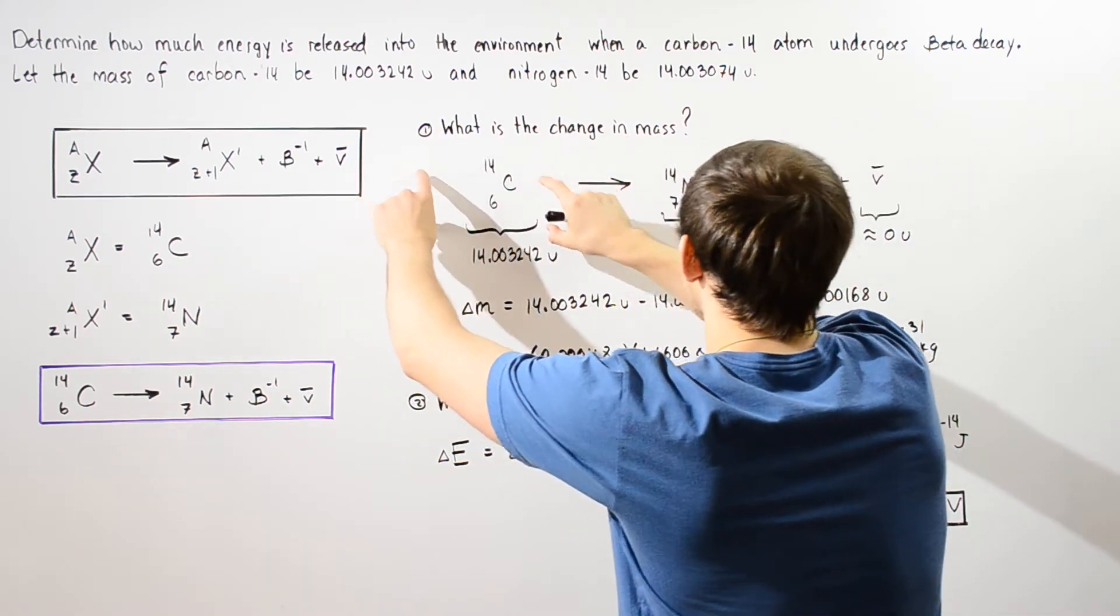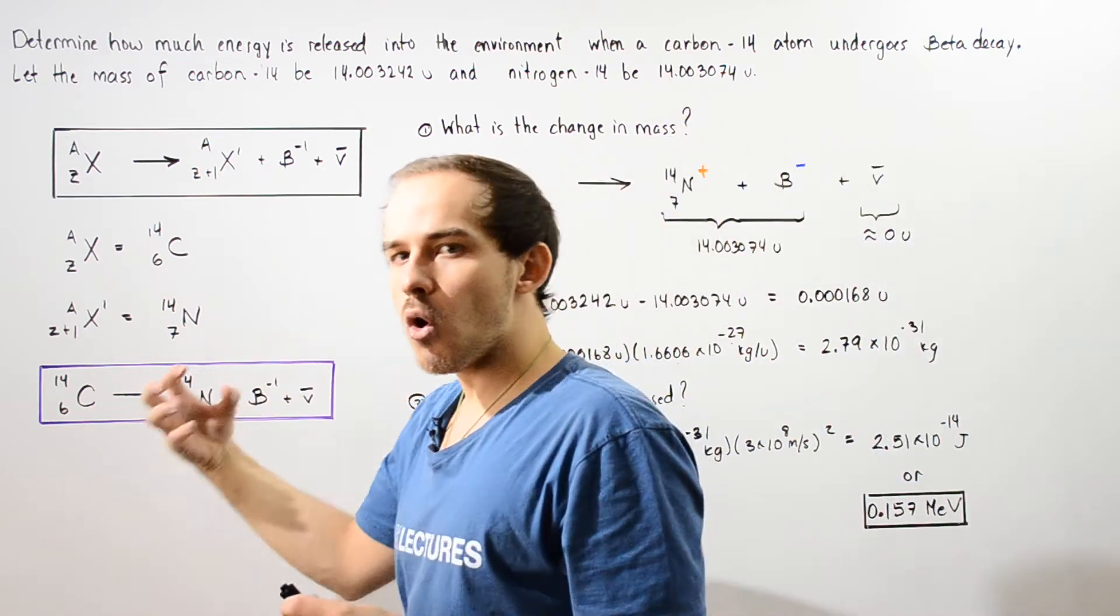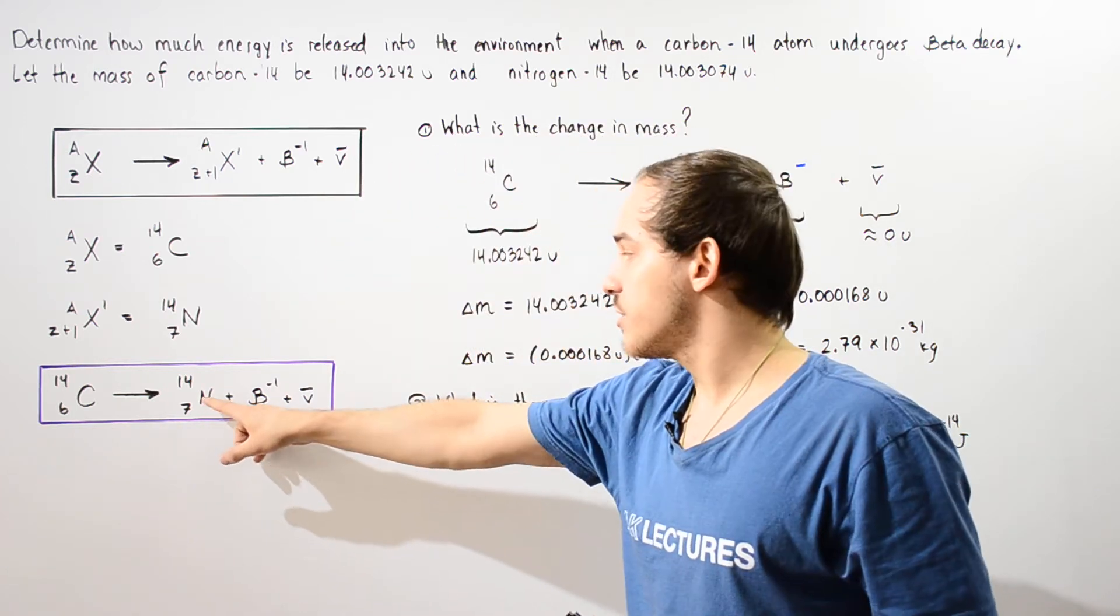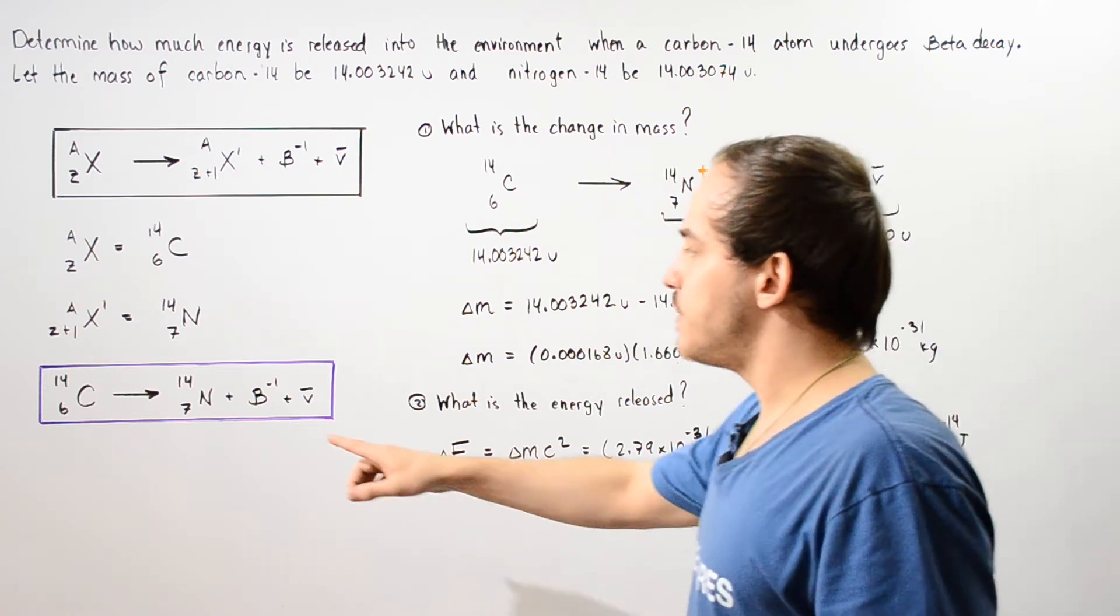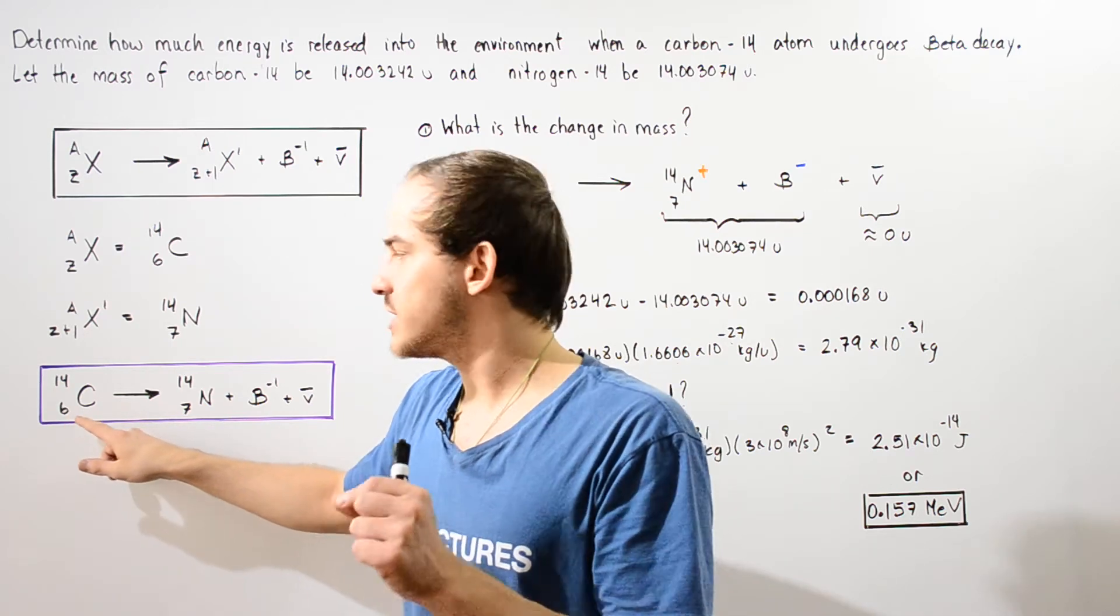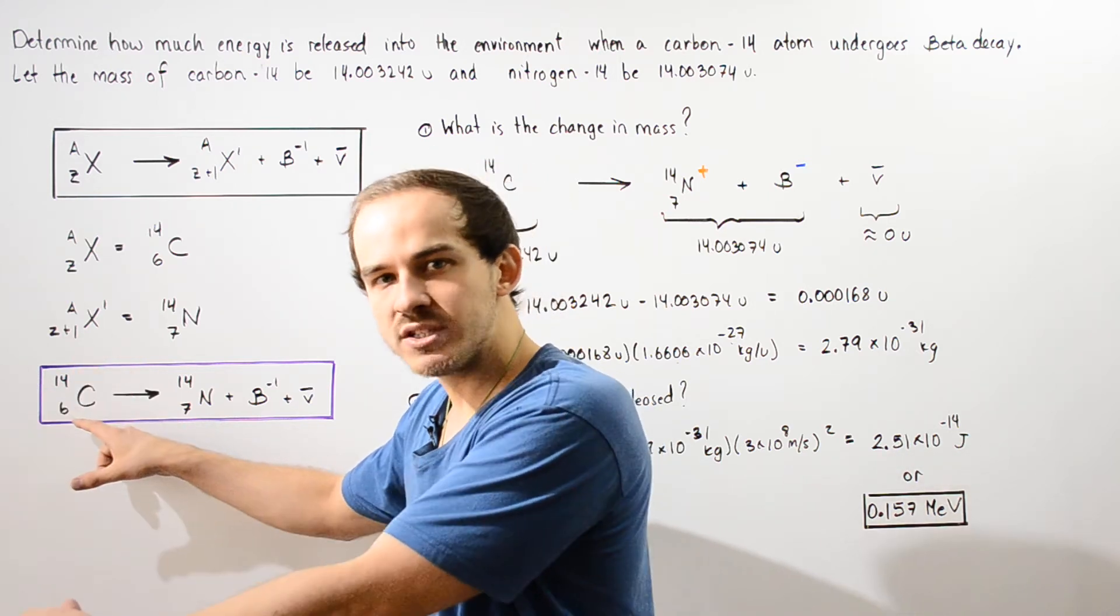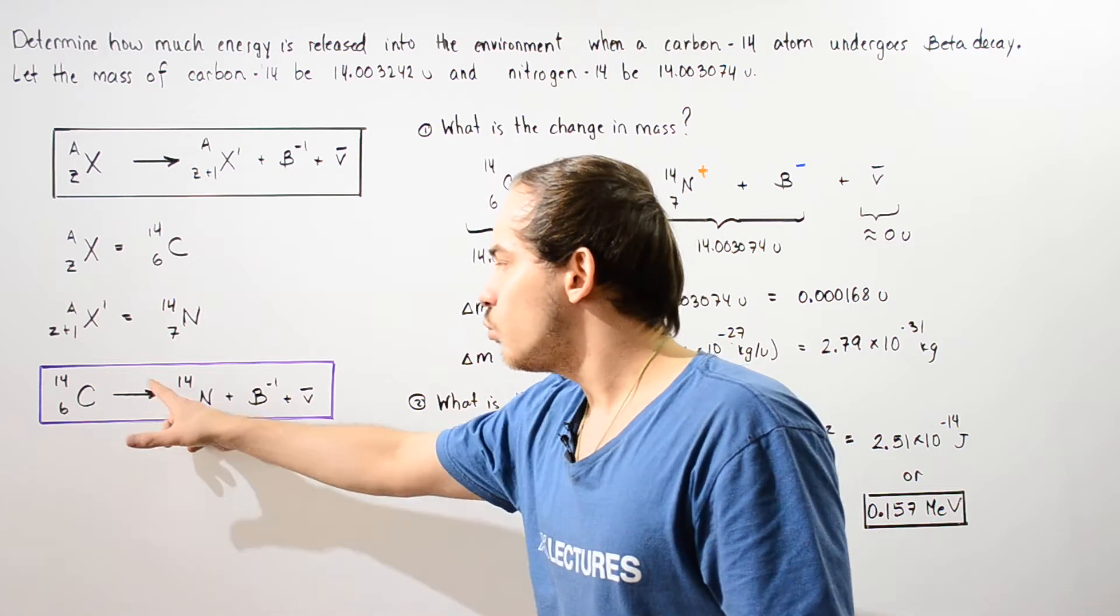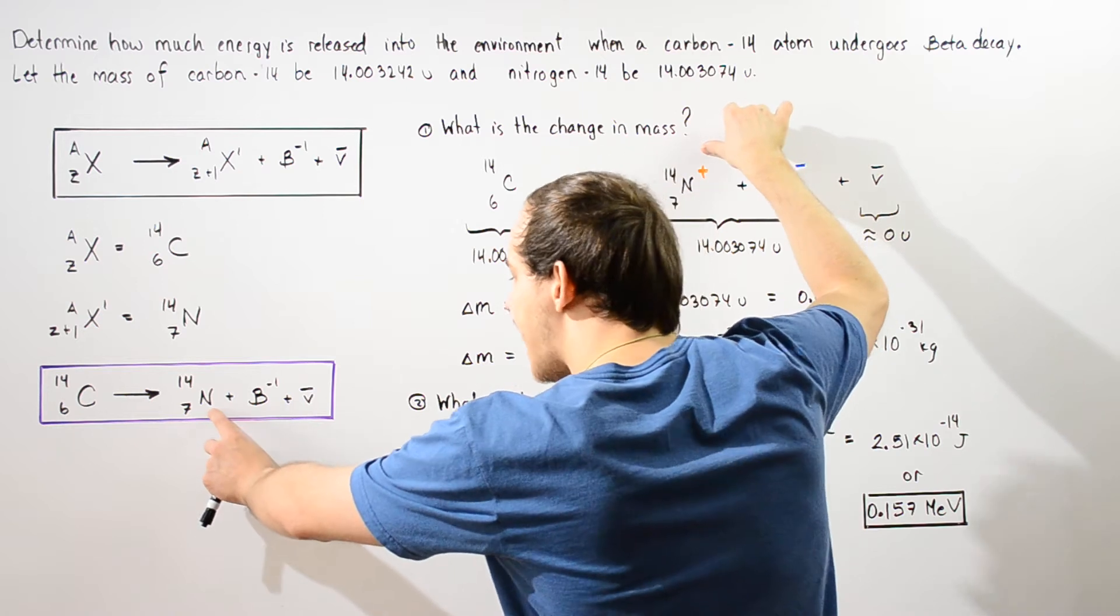Now notice one important thing about our daughter nucleus that is produced. This nitrogen actually has a positive charge and that's because initially we begin with the carbon that is neutral which contains six electrons and then we basically produce one proton. So that means we have six electrons and we have seven protons. So the charge on this one is a positive one.